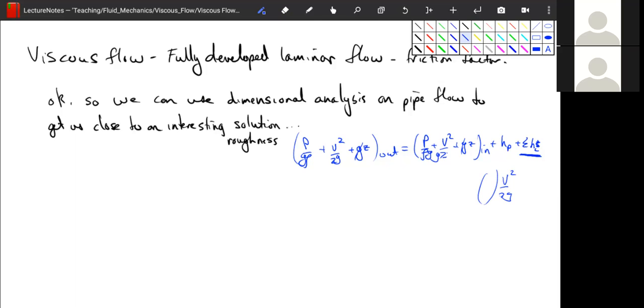So the first thing I want to do is write down our current model for fully developed laminar flow. This q is equal to pi times delta p times d to the fourth divided by 128 mu times l.